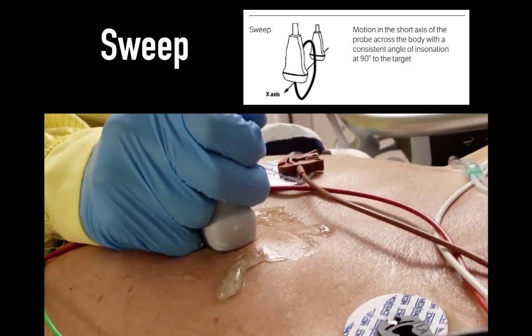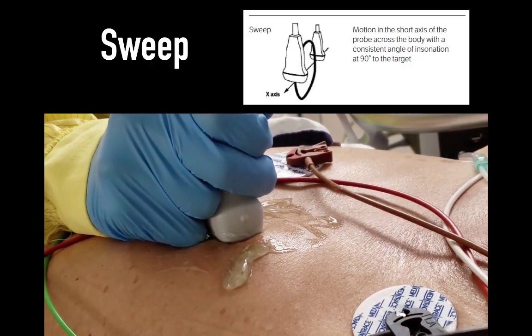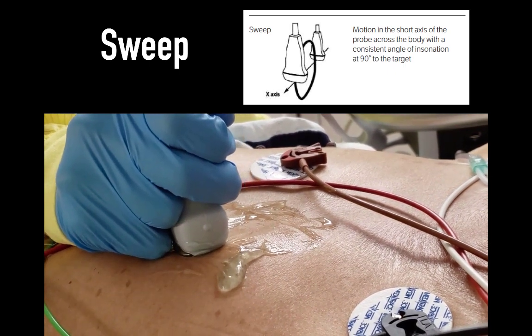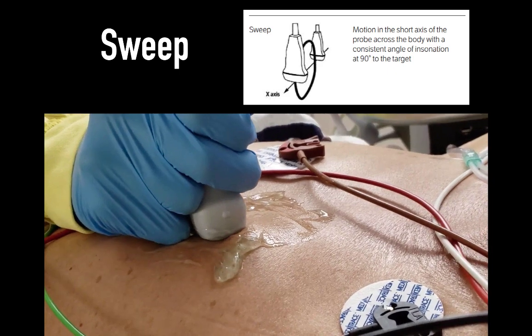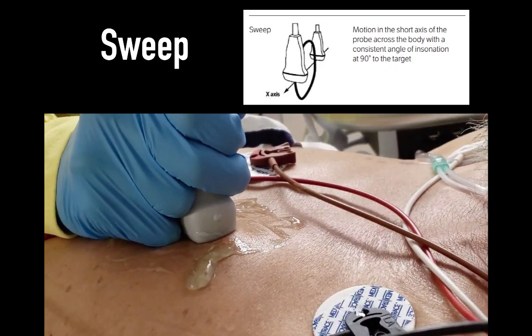Sweeping is motion in the short axis of the probe. With a consistent angle of inclination at 90 degrees to the target, in this case, the head of the probe actually moves on the body, but moves perpendicular to the long axis of the probe, or perpendicular to the probe marker.